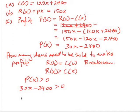So solving this, we'd have 30x would be greater than $2,400. So x would be greater than $2,400 divided by 30, which of course is 80.